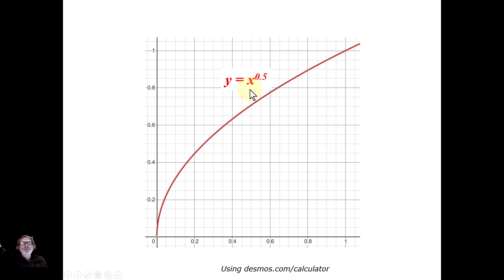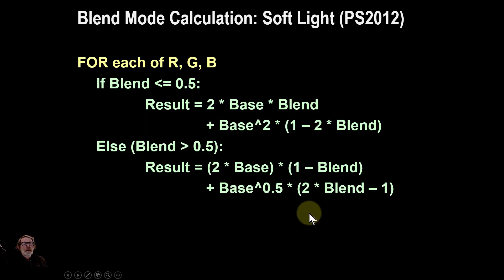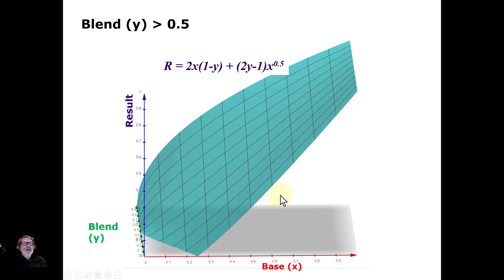And in fact, the way that it's calculated by Photoshop and maybe even Affinity Photo is you have that initial one like this. But also, because that's when it's darker, because the blend is less than 0.5. And otherwise, you've got a different formula, which is this one. Which you get this one in here. Again, just substitute base for x and blend for y, and you'll get the result.